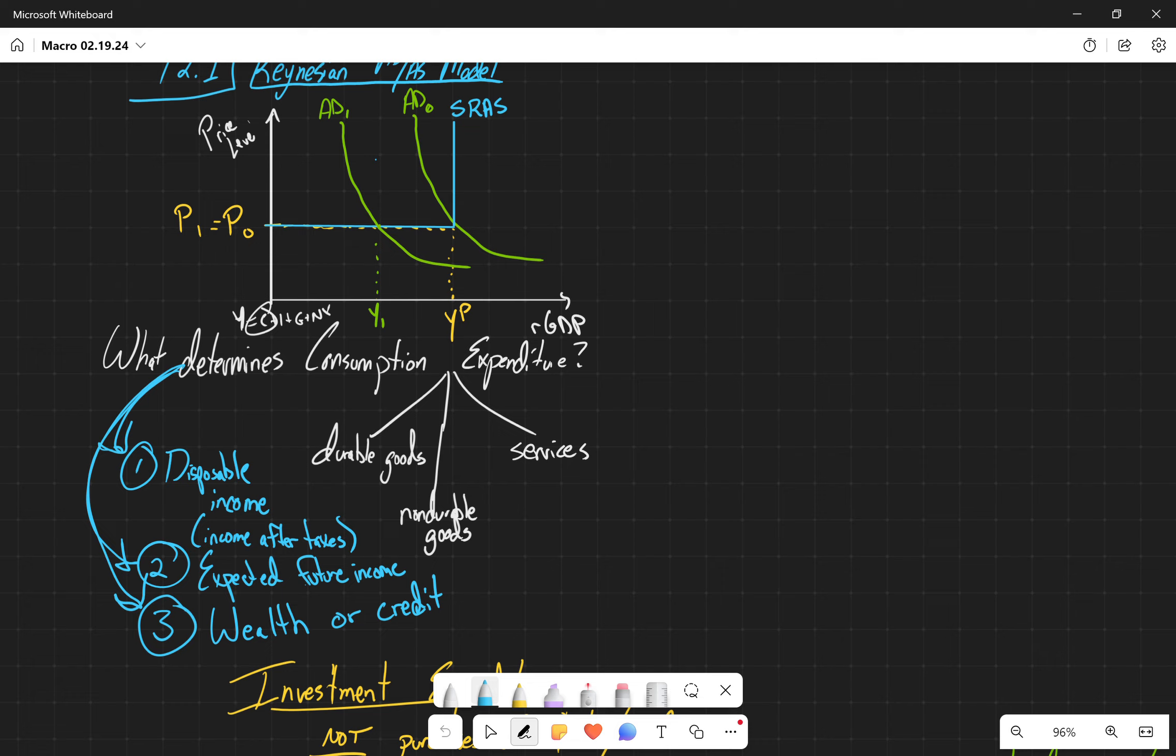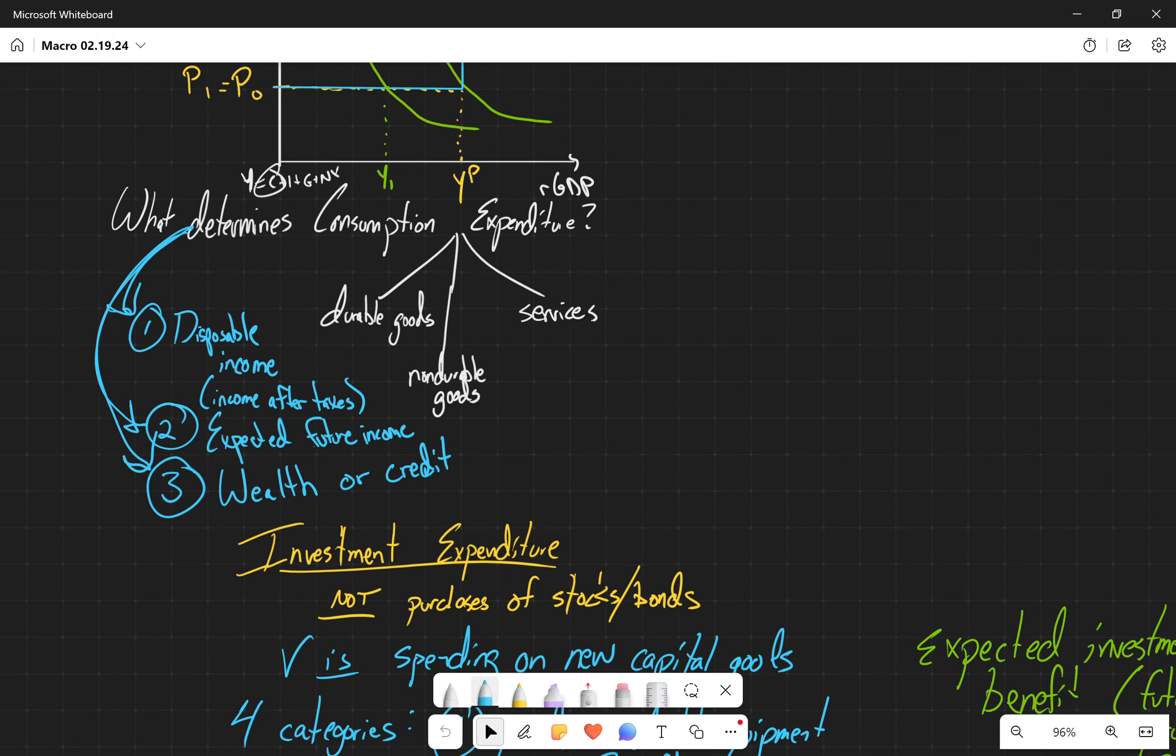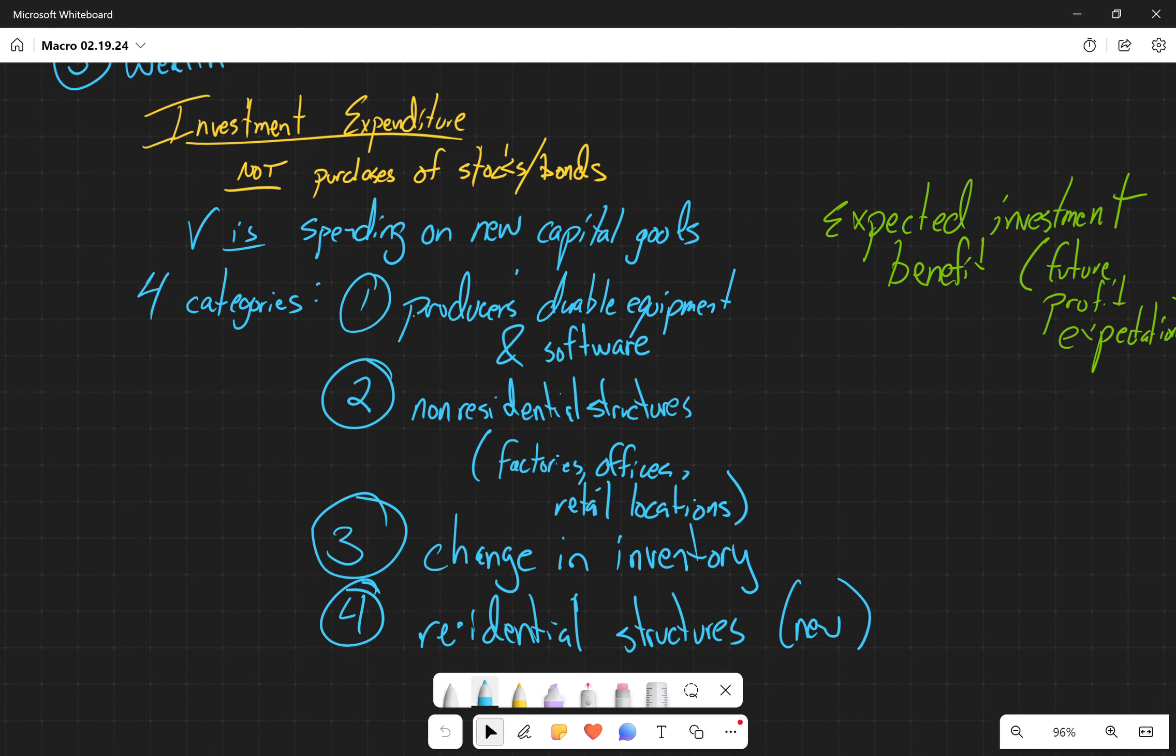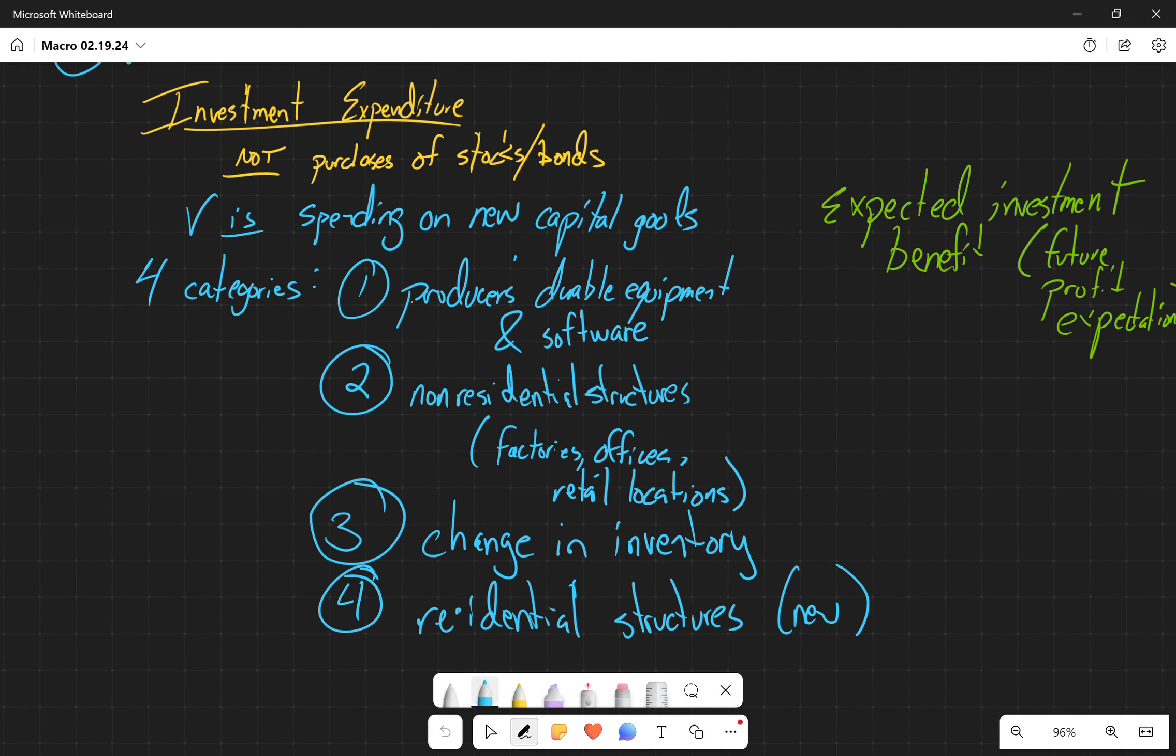Then we talked about investment expenditure. I emphasize the fact that this is not a purchase of a stock and bond. When we talk about finance or accounting and we talk about investments, it's a very different thing. When we're talking about economics, investment is the spending of money on new capital goods.